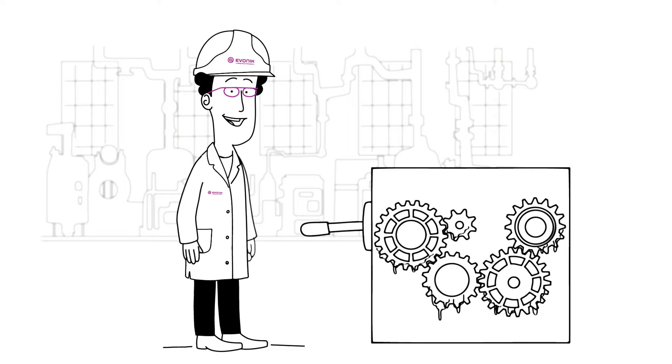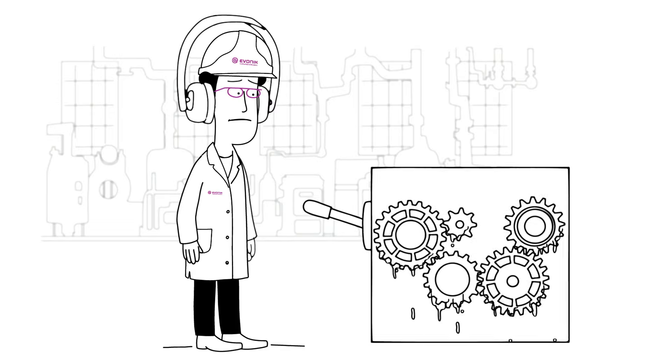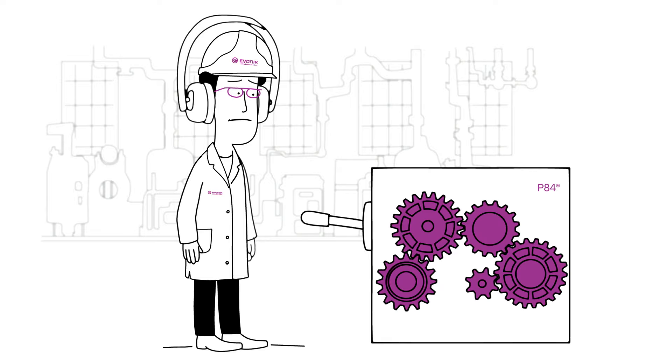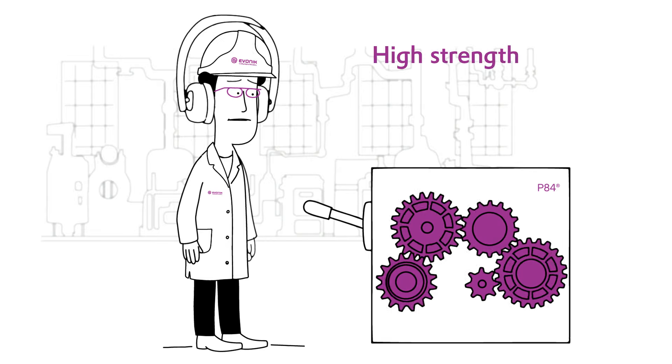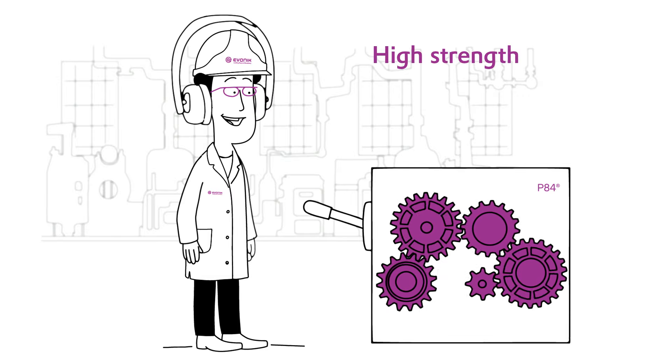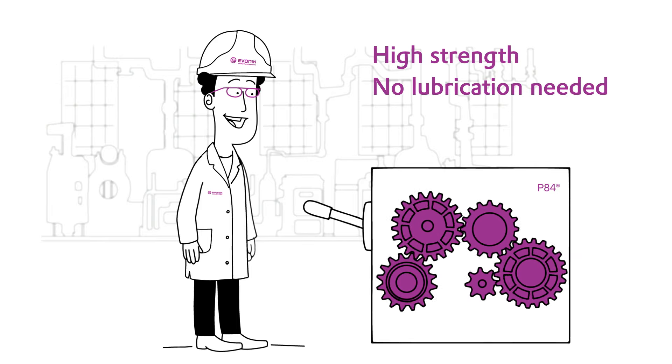Gears, for instance, are highly complex industrial parts which have to withstand extreme conditions. Due to P84's superior tribological performance and high mechanical strength, polyamide-based gear components increase the efficiency and the lifetime of mechanical parts with no additional lubrication needed.